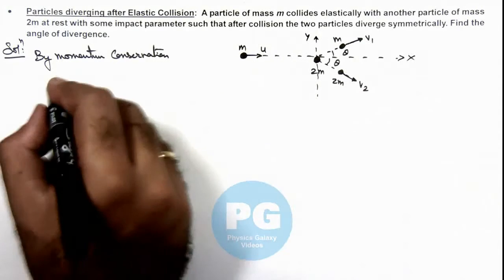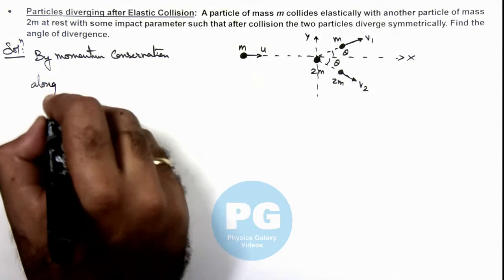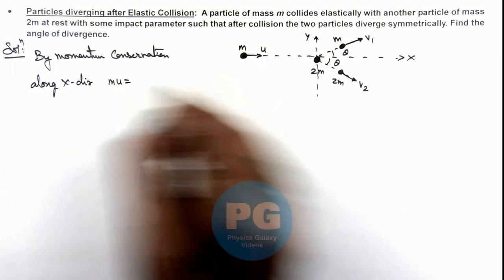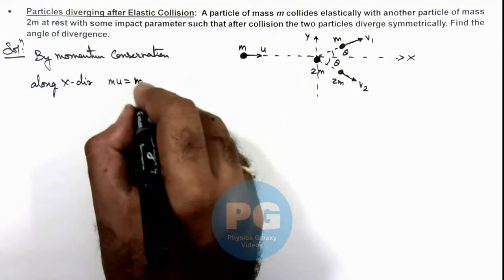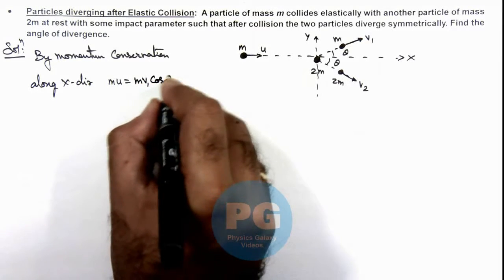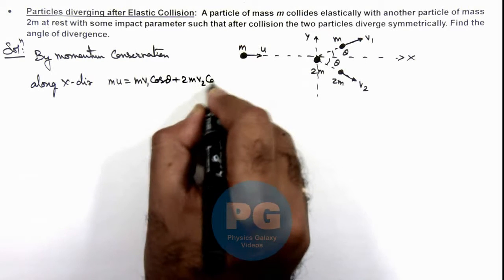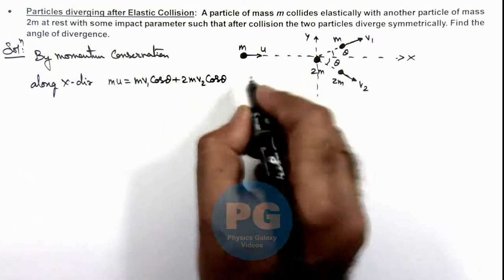If we write the equation along x direction then we can write it as mu is equal to final momentum in x direction. Momentum in x direction is mv1 cos theta plus 2m v2 cos theta, which is our equation 1.